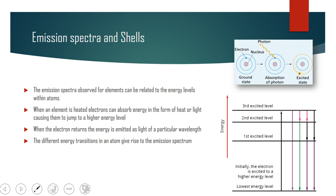When the electron returns, the energy is emitted as a particular wavelength. The different energy transitions in an atom give rise to different emission spectra. If the electron jumps up to the third shell and then comes down to the first, that energy emitted will be much greater than if it jumps up and then comes back down to the second.